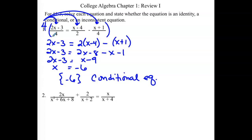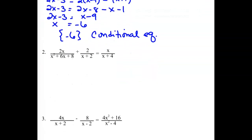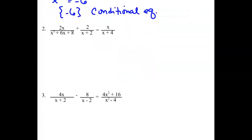Looking at our second example, notice that we have a denominator that now has some variables in it. If we think of this first denominator in its factored form, we would have x plus 2 and x plus 4. Looking at all of our denominators, our common denominator that we're going to multiply by will be x plus 2 and x plus 4.